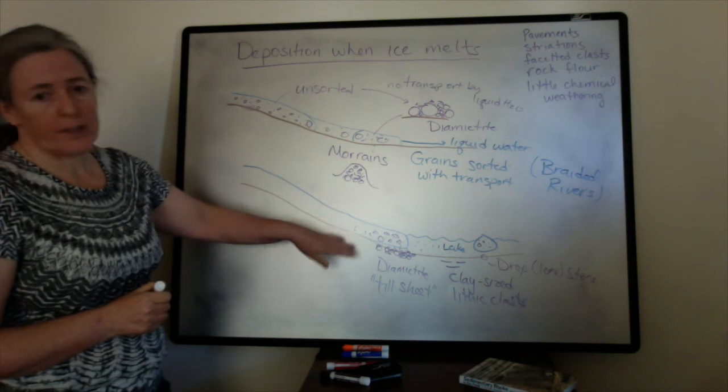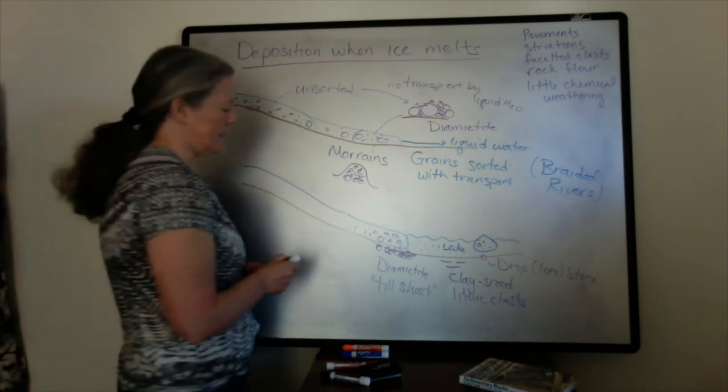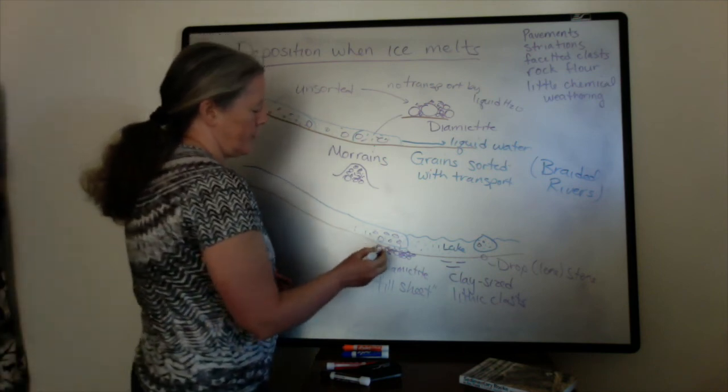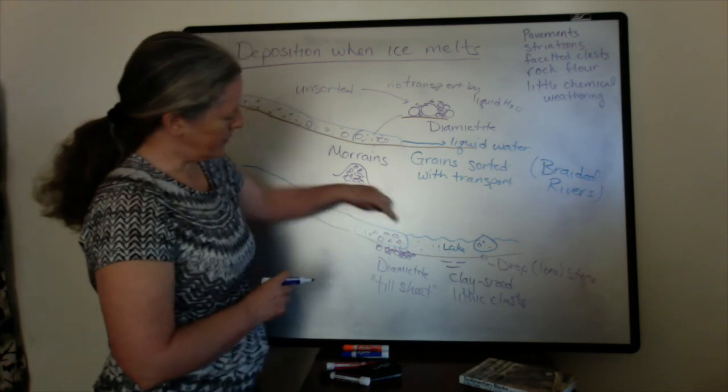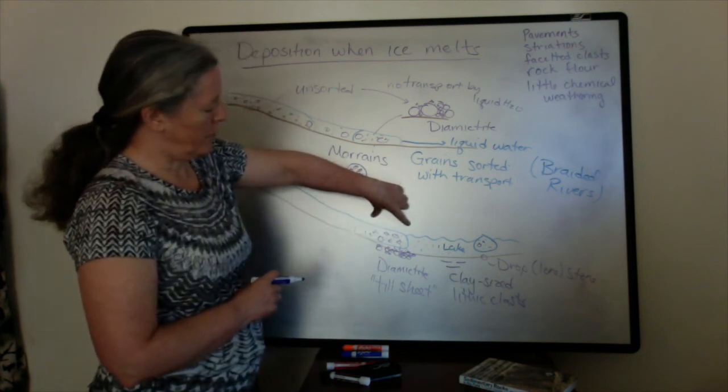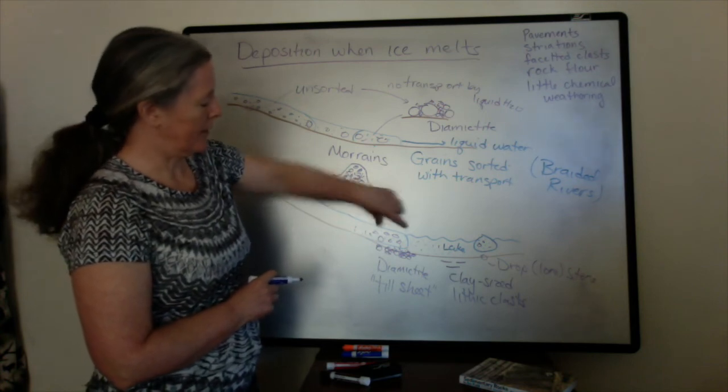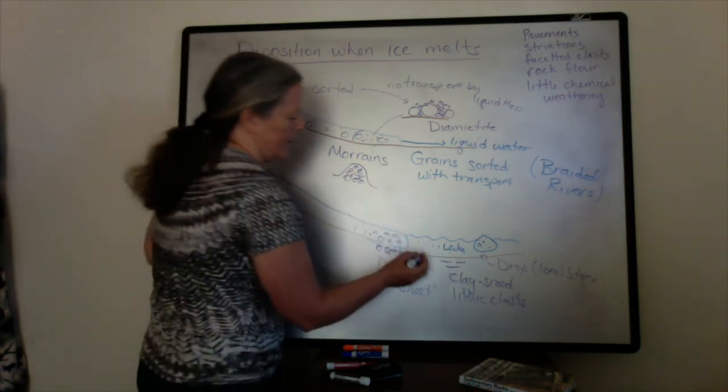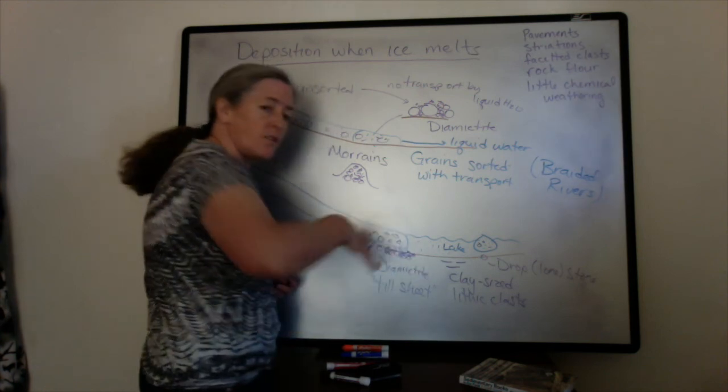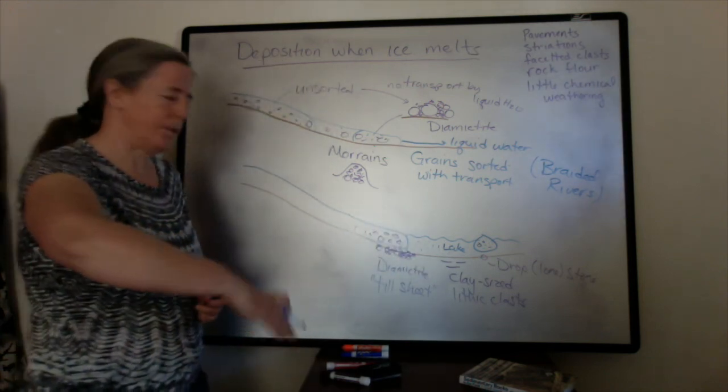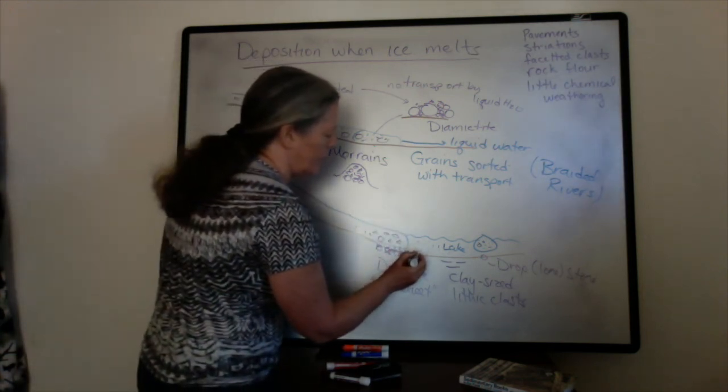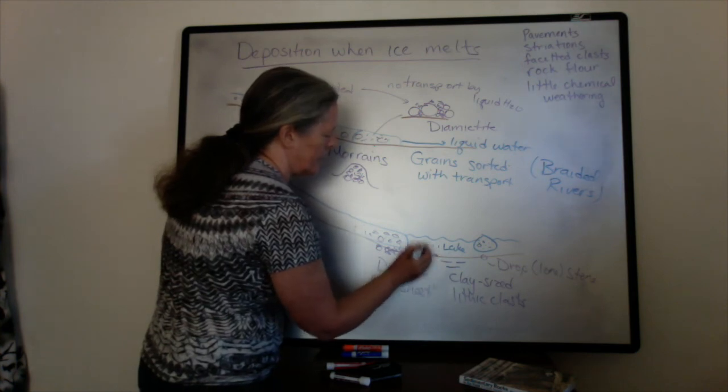And so the final thing that's really common in these settings is turbidites. And that's because the rate of sediment accumulation is highest right where the ice is melting, and the sediment can accumulate there and the slopes can become over-steepened, and you commonly get turbidites.